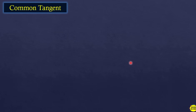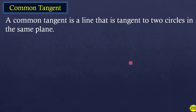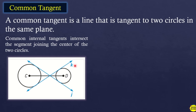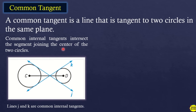Common tangent: a common tangent is a line that is tangent to two circles in the same plane. There are two types: common internal tangents and common external tangents. Common internal tangents intersect the segment joining the centers of the two circles. As you can see in the illustrations, line J and line K are the common internal tangents.